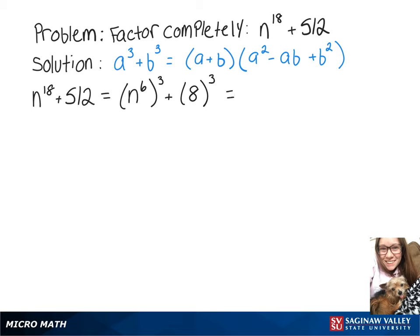So now we're just going to rewrite that using our formula. We have a plus b, which is n to the 6th plus 8, times a squared. n to the 6th squared gives us n to the 12th minus ab, which would be 8n to the 6th, plus 8 squared gives us 64.